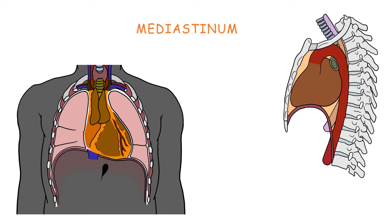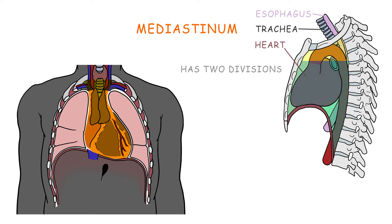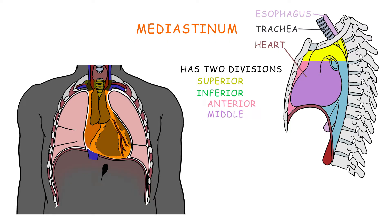The mediastinum contains the heart, trachea, and esophagus. The mediastinum has two divisions: superior and inferior. The inferior one can be subdivided into anterior, middle, and posterior divisions.